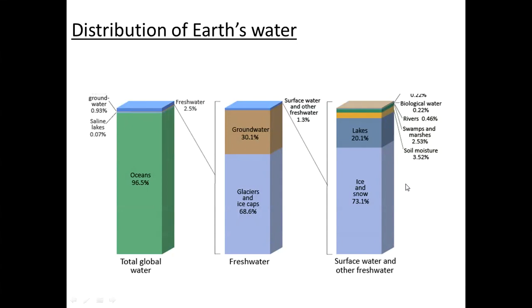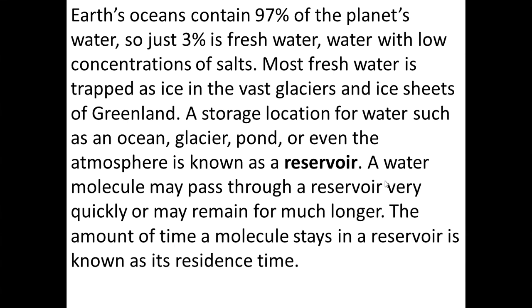The Earth's oceans contain 97% of the planet's water, so just 3% is fresh water. Fresh water means water with a low concentration of salts. Most fresh water is trapped as ice in the vast glaciers and ice sheets of Greenland. A storage location for water — such as an ocean, glacier, pond, or the atmosphere — is known as a reservoir. The amount of time a water molecule stays in a reservoir is known as the residence time.